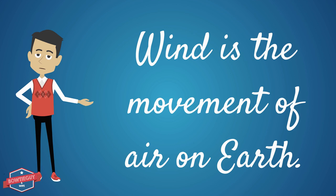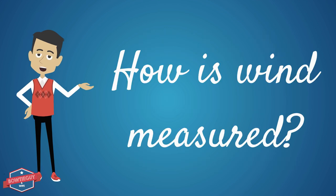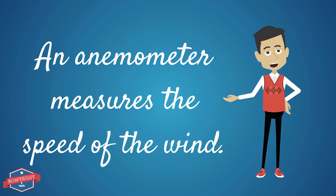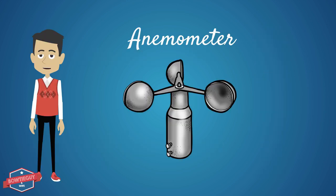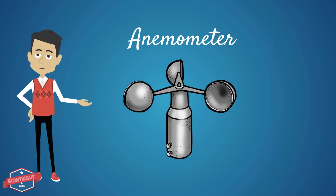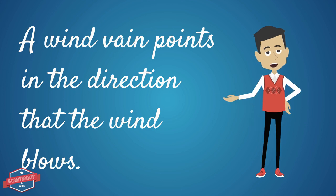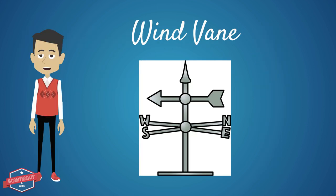What is wind? Wind is the movement of air on Earth. How is wind measured? An anemometer measures the speed of the wind — this is an anemometer. A wind vane can tell you the direction that the wind is blowing — this is a wind vane.